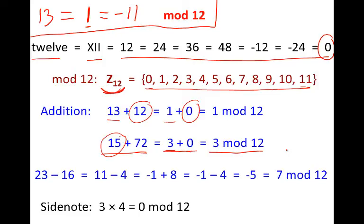I can also use any representative I want. I can note that 23 is equivalent to 11 or I can note that it's equivalent to minus 1. Similarly, minus 16 is equivalent to minus 4 is equivalent to plus 8. So no matter how I subtract 16 from 23, I will always get a number equivalent to 7 mod 12.